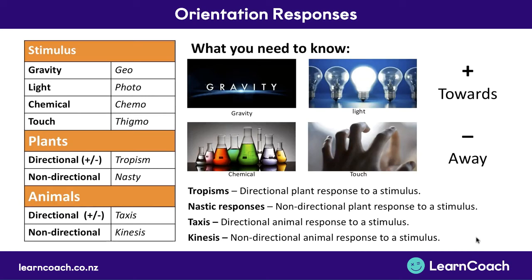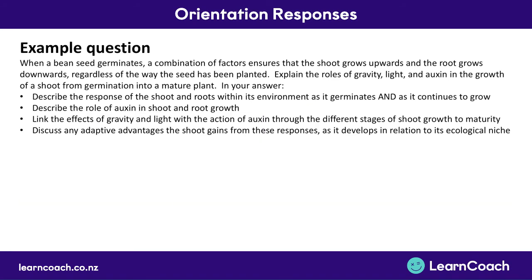Let's look at an exam question. A certain type of bean seed, when it germinates, has a combination of factors that make the shoots grow upwards and roots grow downwards regardless of which way you plant the seed. We need to discuss the roles of light, gravity, and auxin in the growth of both shoot and root from germination through to a mature plant. We'll look at four different factors to address this.